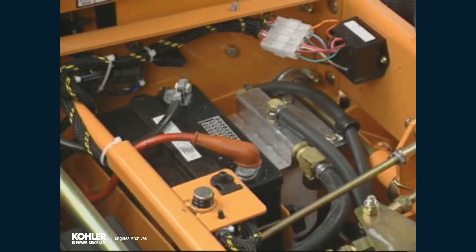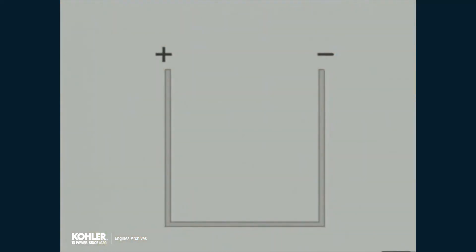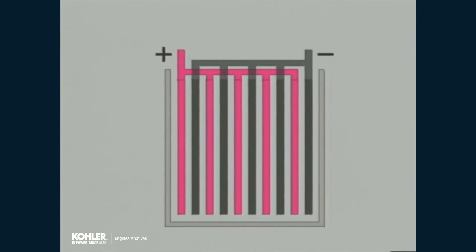Electron movement can also result from chemical reactions. The best example of this is a lead-acid storage battery, which is common in engine applications. Lead-acid batteries have a series of positive electrode plates connected to one battery terminal and negative electrode plates connected to the other terminal. The plates are suspended in sulfuric acid, and the chemical reaction with the acid results in a flow of electrons from the positive plates to the negative plates.